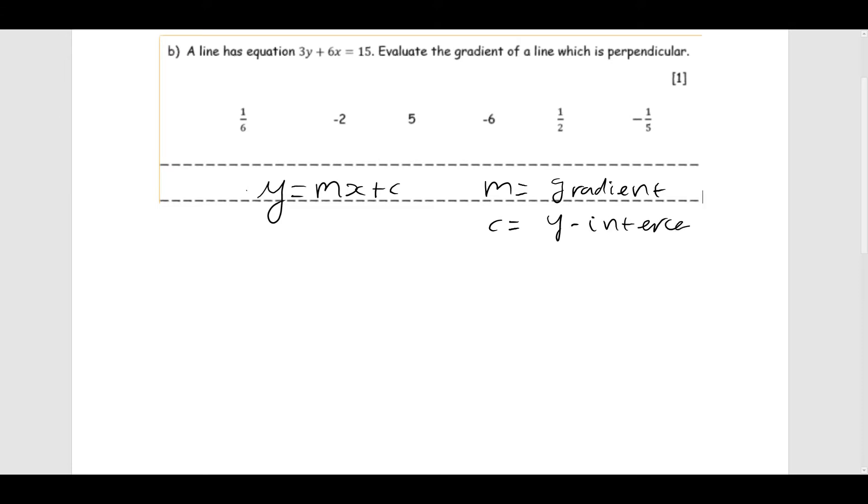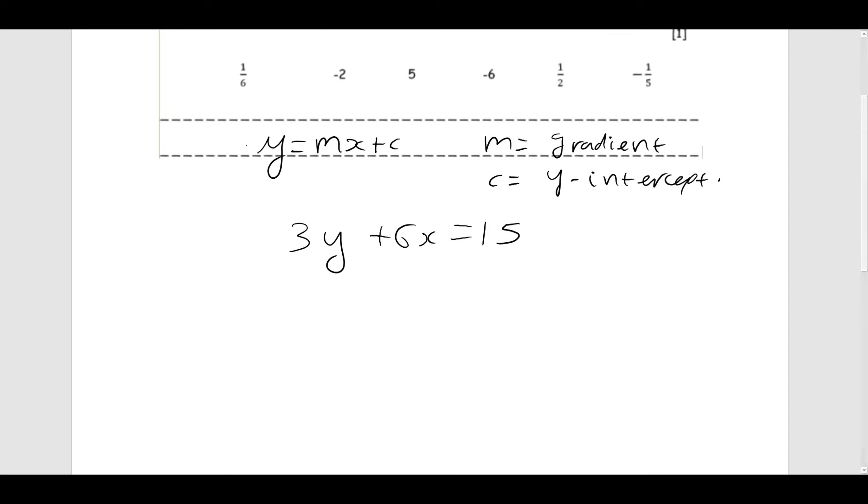So the first thing we're going to do is rearrange the equation that we've been given into that form. What I'm going to do now, with the aim of getting y on its own, is get 3y on its own by subtracting 6x from both sides. That's the opposite of adding 6x. So I have 3y equals 15 minus 6x.